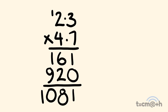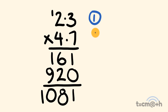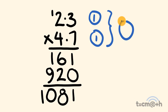Now let's deal with the decimals. We have one number to the right of the decimal place in 2.3 — that is the 0.3 part. For 4.7 we also have one number to the right of the decimal place. We add these together: 1 plus 1 is equal to 2. That means our answer is going to have 2 numbers to the right of the decimal place. Starting at the right we count in 2 places and put the decimal right there. Our answer is 10.81.